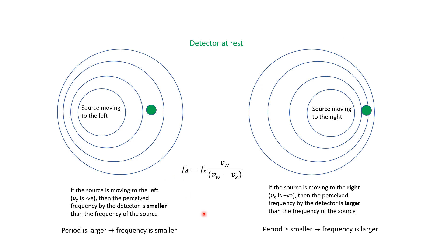To summarize: when the detector is at rest, the perceived frequency depends on the direction of the source. If the source moves to the right, the wavelength is shorter, the time between successive wavefronts is smaller, and the frequency is higher — confirmed by the factor v_w / (v_w − v_s) being greater than 1. If the source moves to the left, the wavelength is larger, the period is longer, and the frequency is smaller — the factor is less than 1.